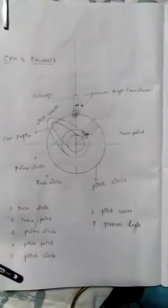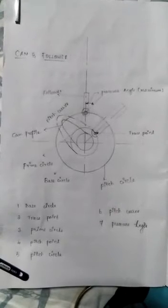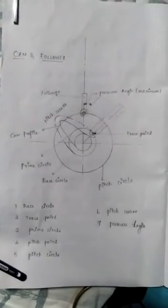And the sixth one is pitch curve. Pitch curve is a curve drawn by trace line assuming that the curve is fixed and trace point of the follower rotates around the cam.